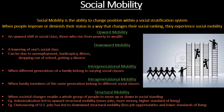The third type is intergenerational mobility, which refers to when different generations of a family belong to varying social classes. For example, if your grandparents were very poor, your parents worked their way up to middle class, and you yourself are upper middle class — that's intergenerational mobility: different generations of the family belonging to different social groups.